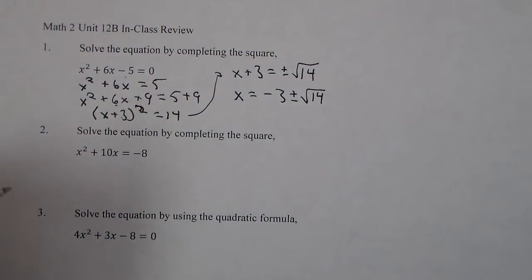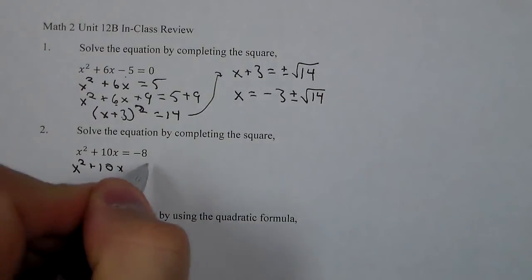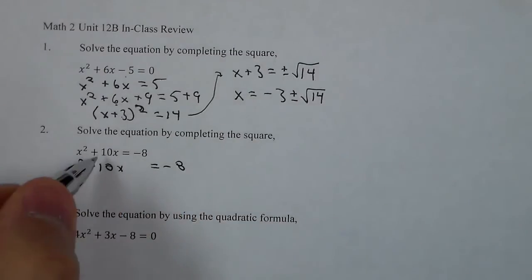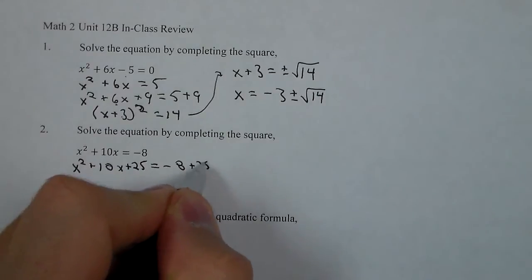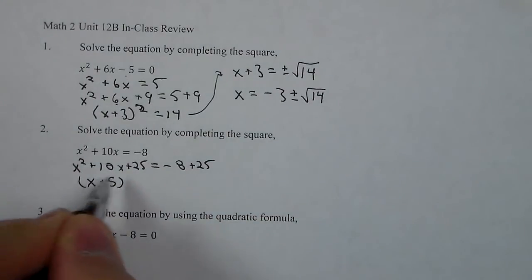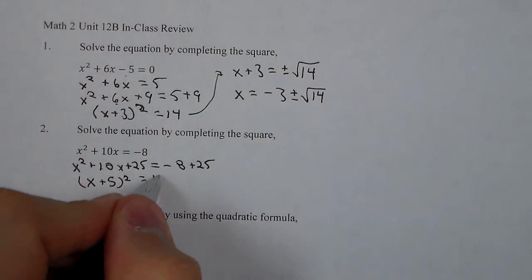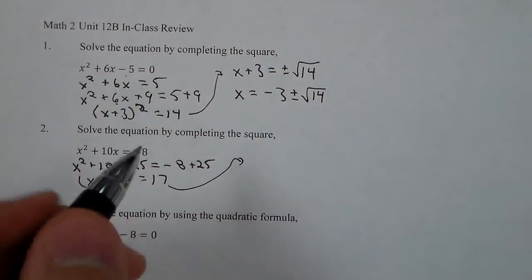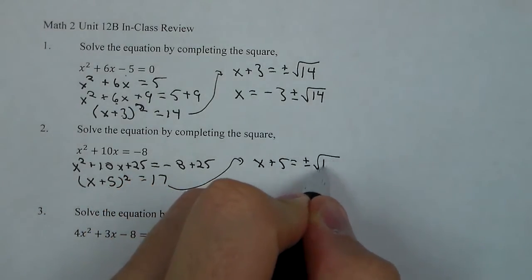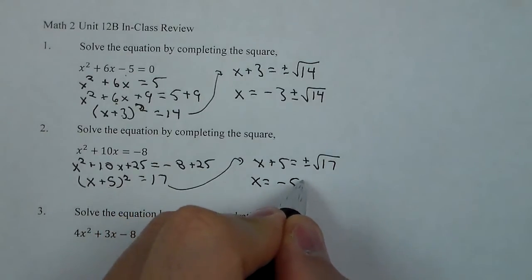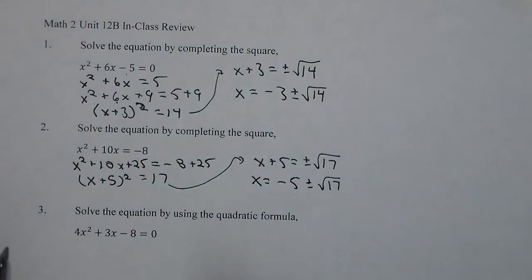Number 2 is going to follow the same order. We already have the negative 8 moved over. The value we're going to add to both sides: we're going to take half of 10 and square it, which is 25. We now have x plus 5, quantity squared — because we took half of 10 — equals 17. From taking the square root of both sides we get x plus 5 equals plus or minus the square root of 17. Then we subtract 5 and our answer is negative 5 plus or minus the square root of 17.